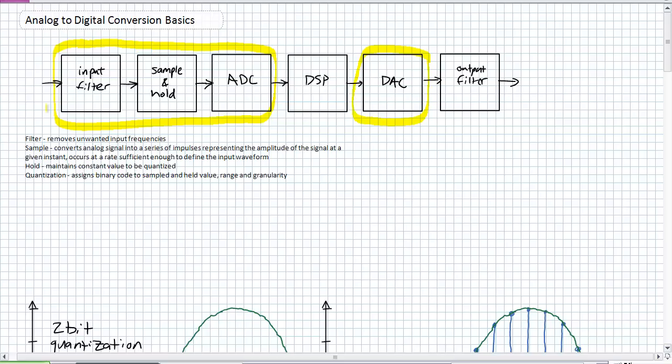What this block diagram, if we refresh our memories here, the filter is going to remove unwanted input frequencies. So why are we going to input noise if we don't want it? So we just go ahead and get rid of it, potentially some high frequency components that we don't need.